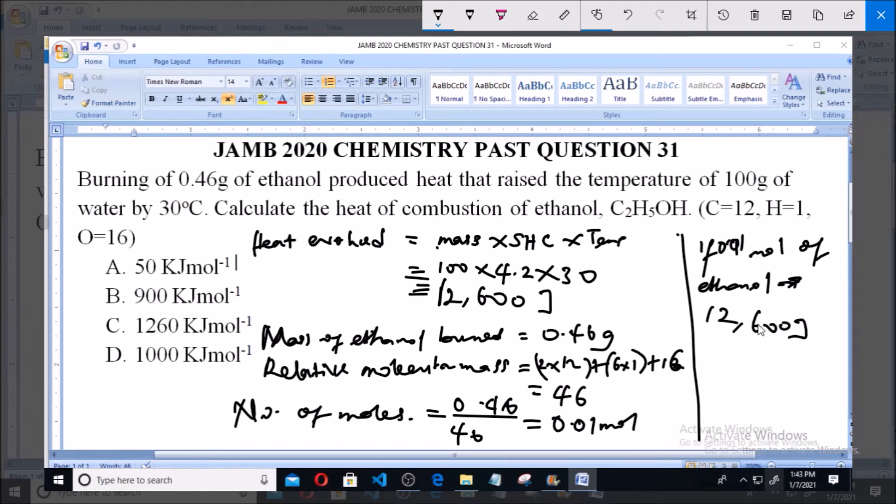For 1 mole of ethanol, that equals 12,600 joules divided by 0.01. From this calculation, we get 1,260,000 joules per mole.